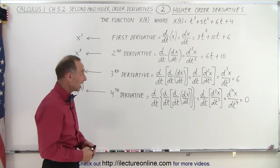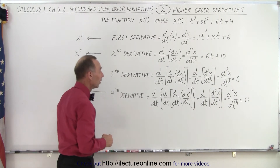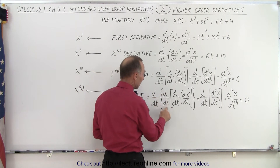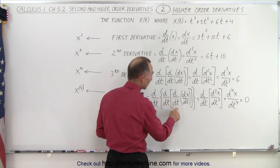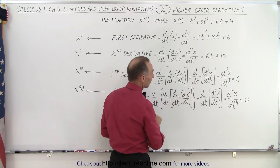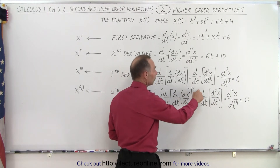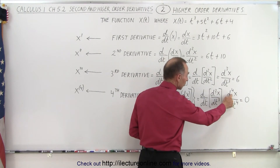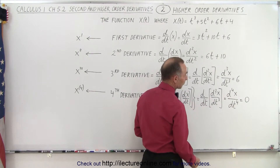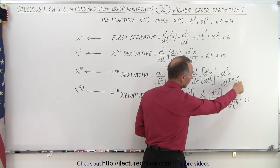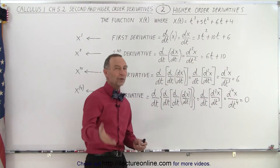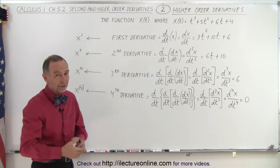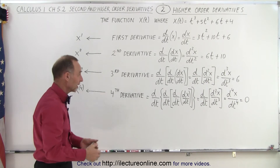When we take the derivative again, this is now the fourth derivative, written as d⁴x/dt⁴. The derivative of the constant 6 gives us 0. Of course the fifth, sixth, and seventh derivatives will all be zeros, because when you take the derivative of 0, you get 0 again.